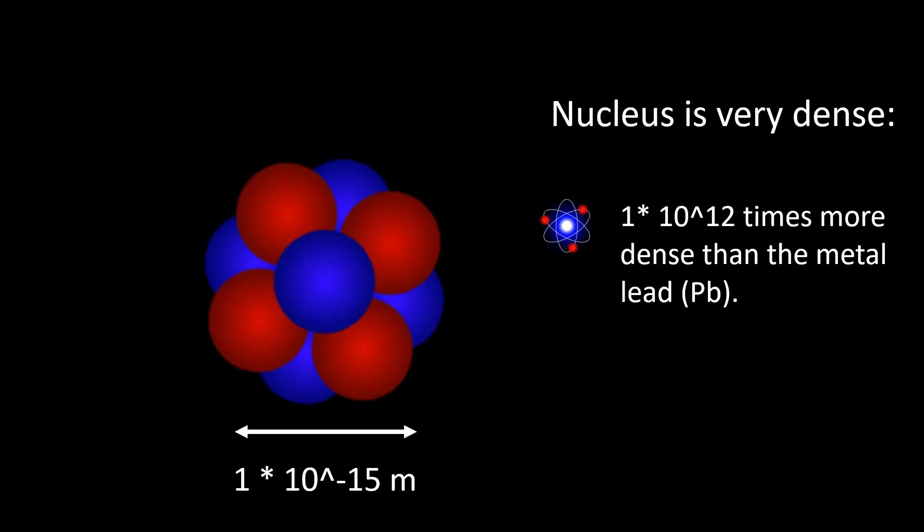Considering their relative masses, nearly all the mass of an atom is concentrated in the nucleus, but the nucleus occupies only a very small fraction of the atom's volume.